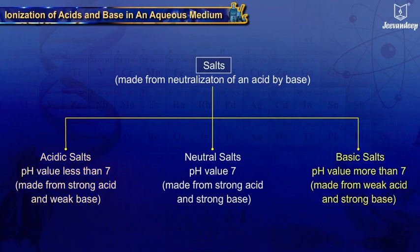Basic salts are made from weak acid and strong base, and the resulting solution has pH value more than 7. Neutral salts are made from strong acid and strong base, and the resulting solution has pH value equal to 7.